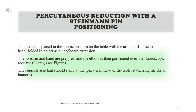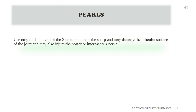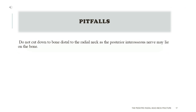Percutaneous Reduction with the Steinmann Pin — Positioning: the patient is placed supine with the arm board at the ipsilateral head, folded in to act as a headboard extension. The forearm and hand are prepped and the elbow is positioned over the fluoroscopic receiver (C-arm). The surgical assistant stands at the ipsilateral head stabilizing the distal humerus. Pearls: use only the blunt end of the Steinmann pin, as the sharp end may damage the articular surface and may also injure the posterior interosseous nerve. Pitfalls: do not cut down to bone distal to the radial neck, as the posterior interosseous nerve may lie on the bone.